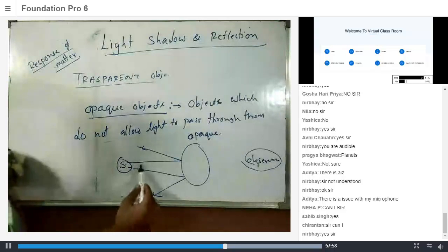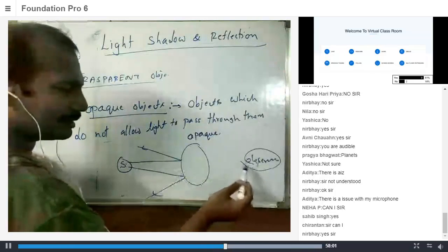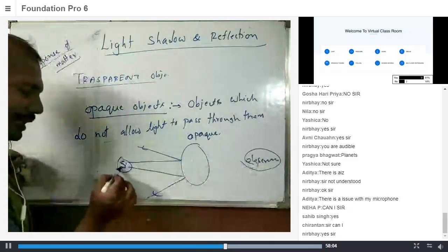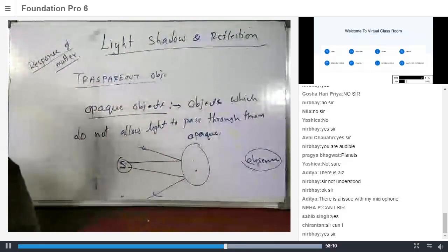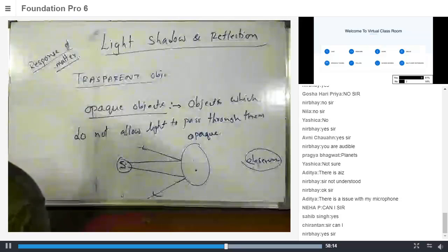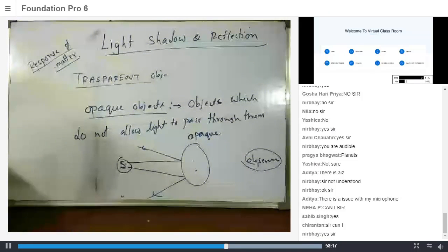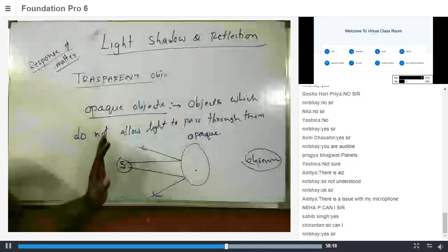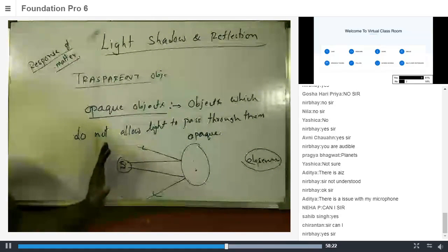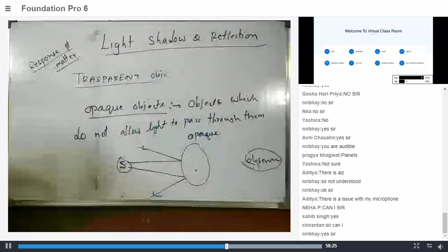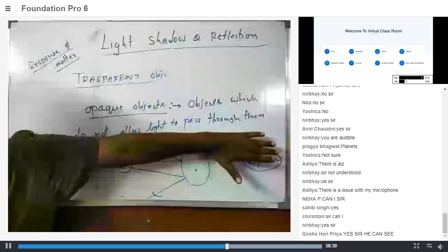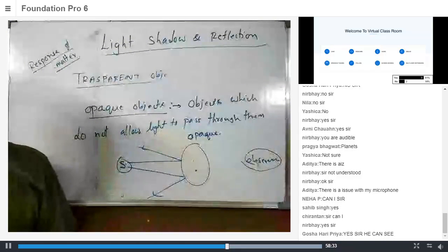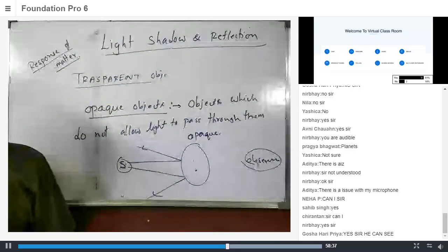Teacher continues: 'Here is the observer. Can the observer see the opaque object? This is the source of light.' A student says they cannot understand. Others respond: 'Yes sir, the observer can see' and 'The observer cannot see because the light is coming from behind.' Teacher clarifies for Nirbhai: 'Opaque objects are objects which do not allow light to pass through them. That's clear, Nirbhai?' Nirbhai: 'Yes, sir.'